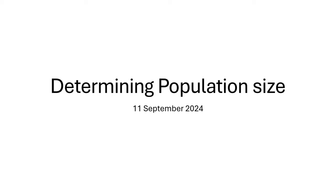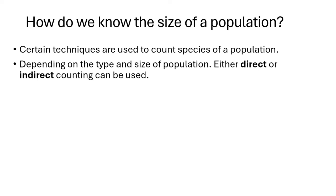You often hear that there are about 20 elephants in South Africa, and you now wonder how do people count the number of certain animals when the animals are living in the wild. So today's video we're going to be looking at determining the population size. How do we actually know the size of a population? There are certain techniques that are used to count species of a population, and those techniques will all depend on the type and the size of the population.